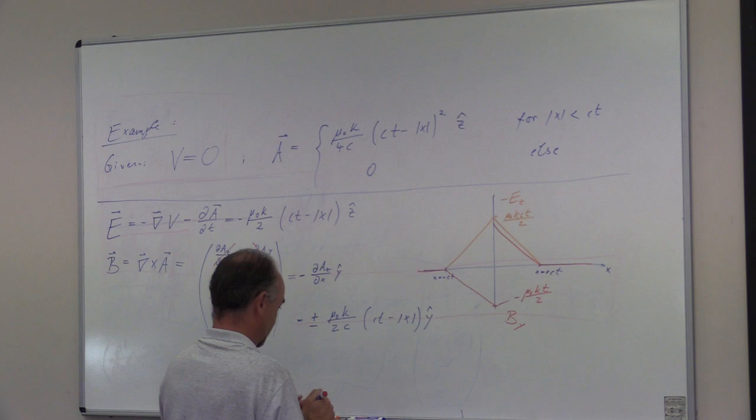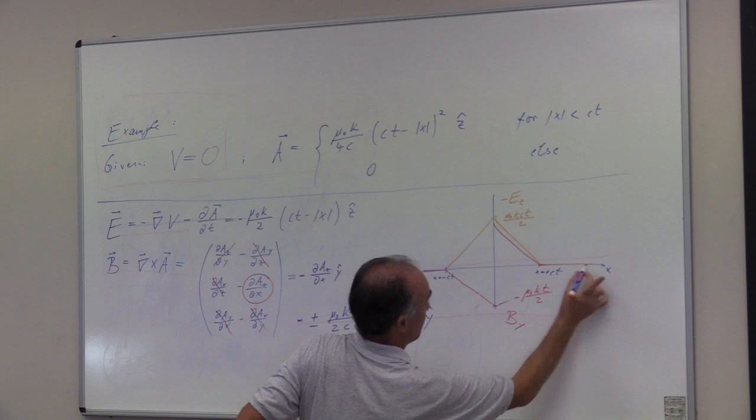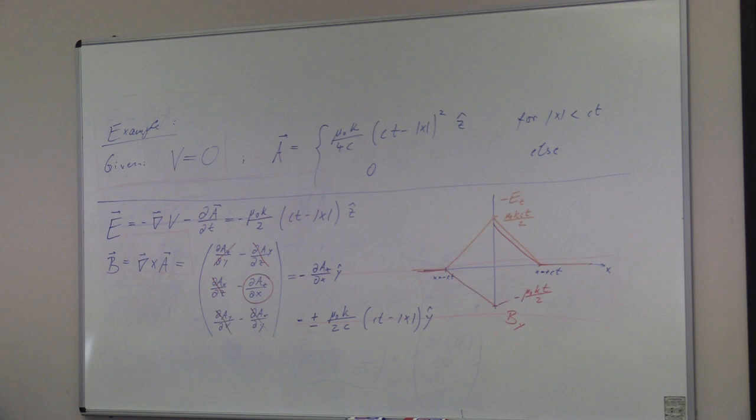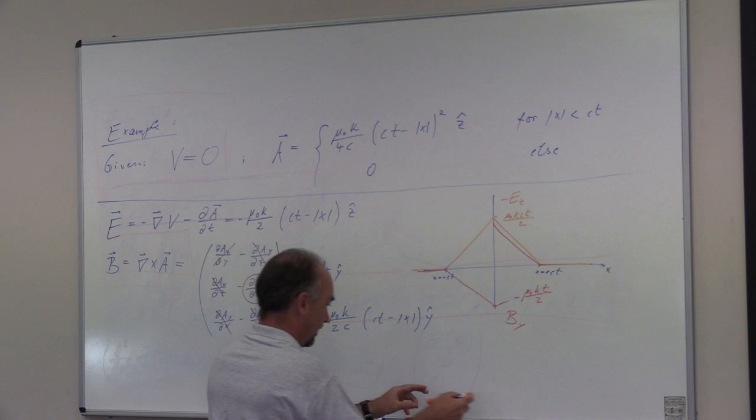So of course here, the fields are all zero outside of this range, right? Because outside of this range, all the potentials are zero and obviously the fields are zero. Okay, good.